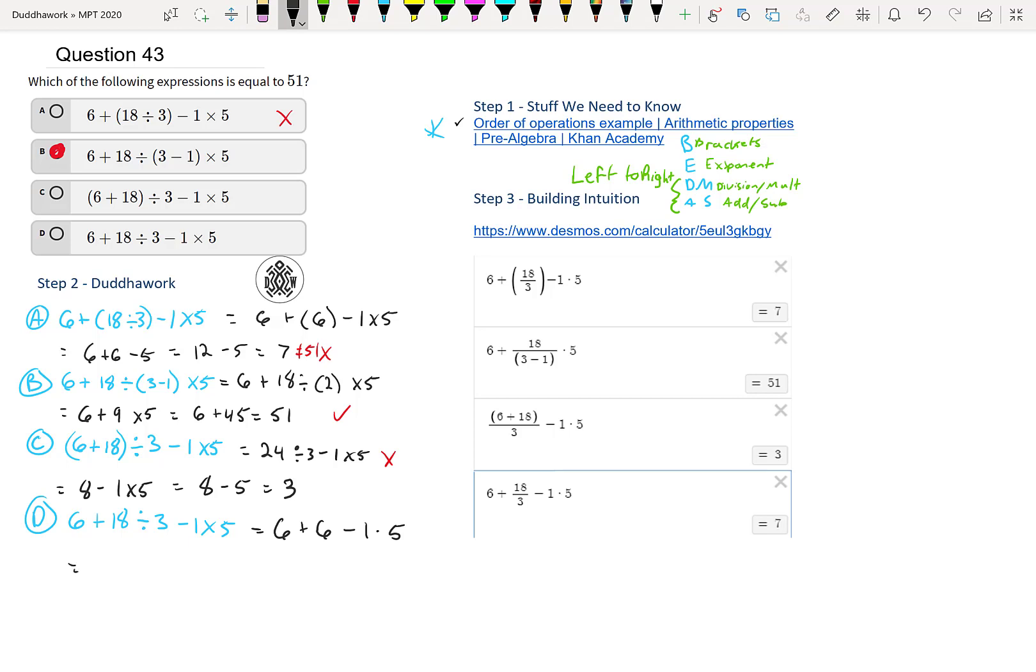And then we have a multiplication again. So that's 6 plus 6 minus 1 times 5. So minus 5. That's 12 minus 5, which is 7. So 12 minus 5, which is 7 as well.